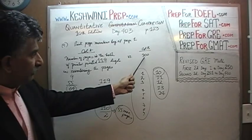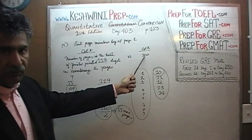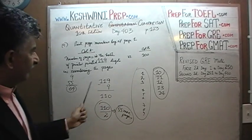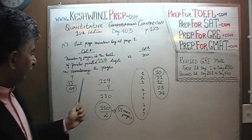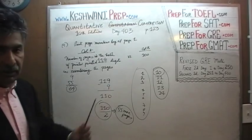So in the second column, had they put down 64, the answer would have been C. If they put down 65, the answer would be B.